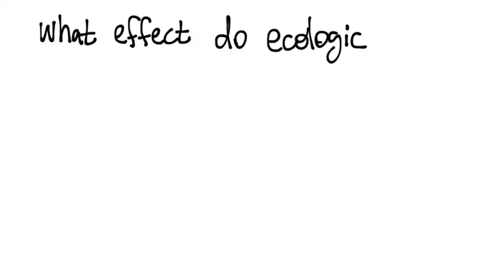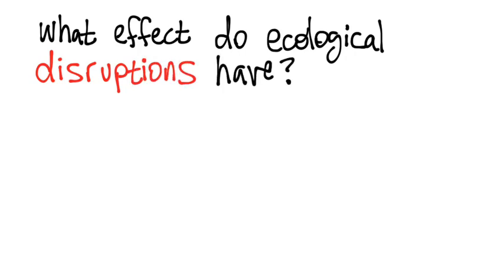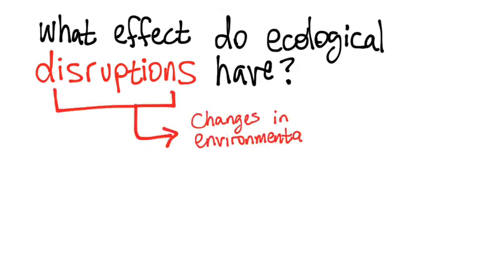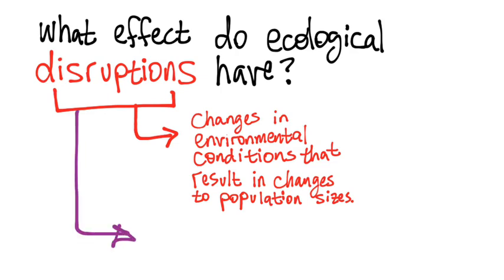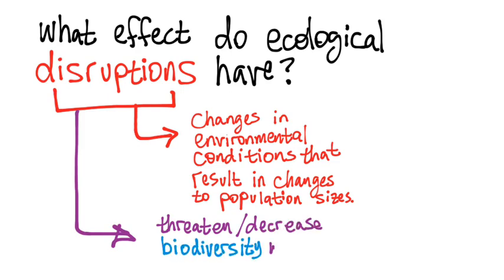We're going to take some notes here that are going to address this question: What effect do ecological disruptions have on ecosystems? So let's get started and define disruptions. These are changes in environmental conditions that result in profound changes to population sizes of different species within that system. Disruptions are going to threaten and even decrease biodiversity within an ecosystem.